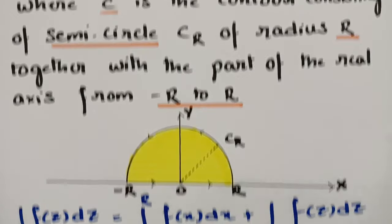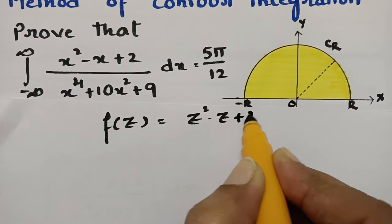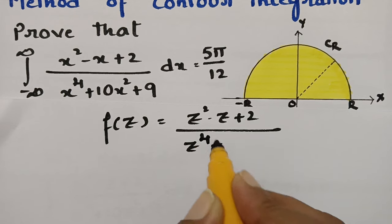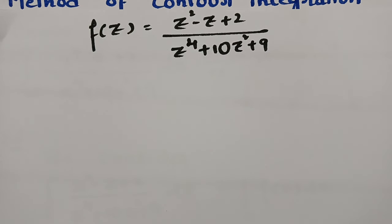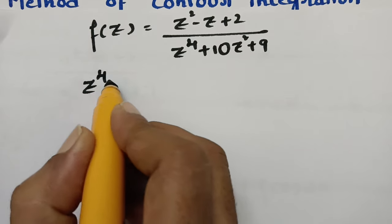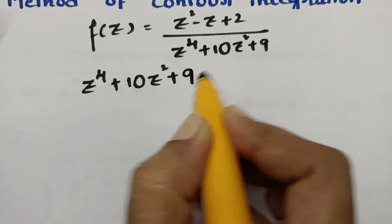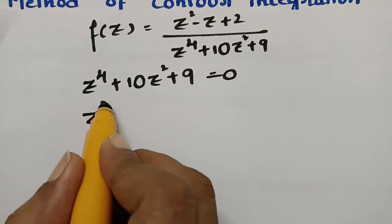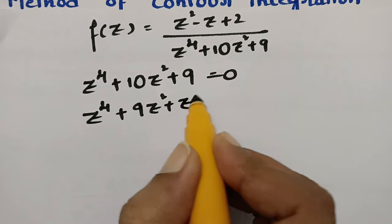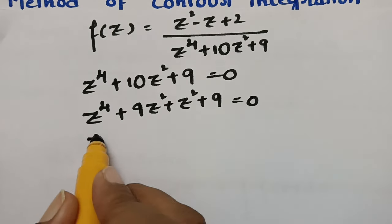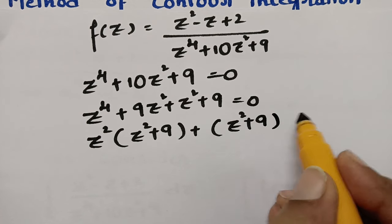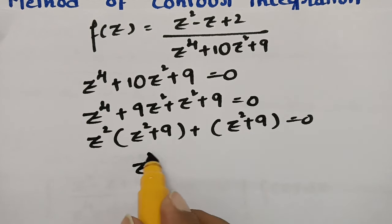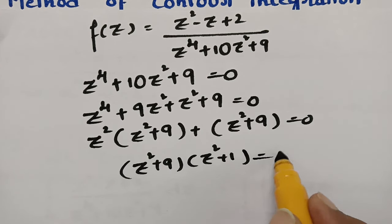Now we have to find the poles. To find the poles, we equate the denominator to zero: z⁴ + 10z² + 9 = 0. Splitting 10 as 9 + 1, we get z⁴ + 9z² + z² + 9 = 0. Taking z² common gives z²(z² + 9), and taking 1 common gives 1·(z² + 9), so factoring out (z² + 9) leaves (z² + 9)(z² + 1) = 0.